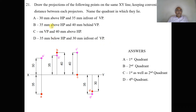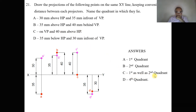For point A — above HP and in front of VP — that is the first quadrant condition, so A lies in the first quadrant. Point B is above HP and behind VP, which is the second quadrant condition, so B lies in the second quadrant. Point C is on VP and 40 mm above HP; since above HP applies to both first and second quadrants, C lies in both the first and second quadrants. Point D is below HP and in front of VP, which is the fourth quadrant condition, so D lies in the fourth quadrant.